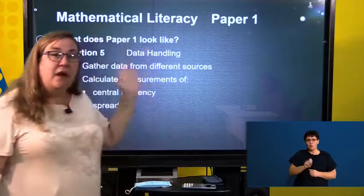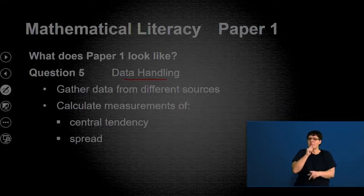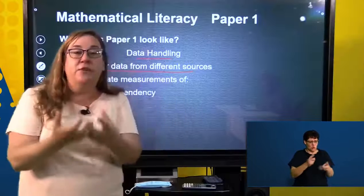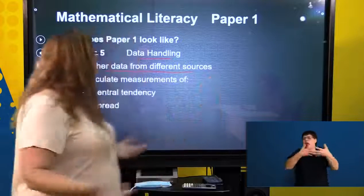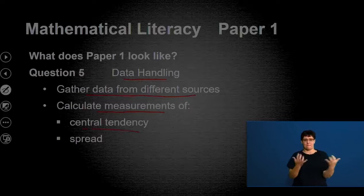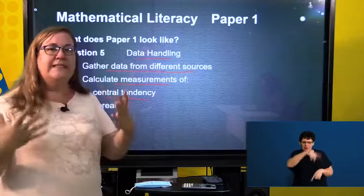Question five, finally, the last question that you have is data handling. Here, we gather data from different sources. They will give you data from different sources and it can be really from absolutely anywhere. And then finally we do calculations. We kind of looked at central tendencies. So I'm just quickly going to recap. What are our central tendencies? We've got our average averages. We call those, our central tendencies, our averages.